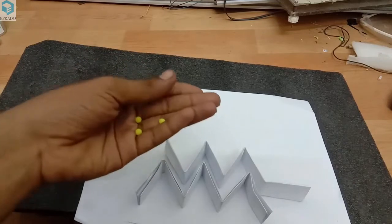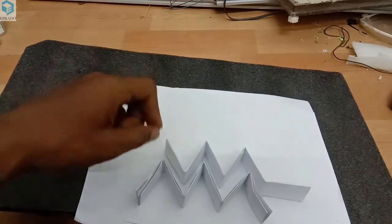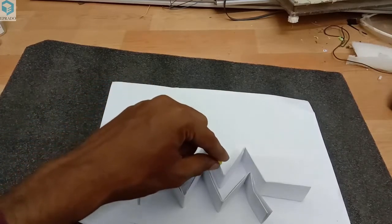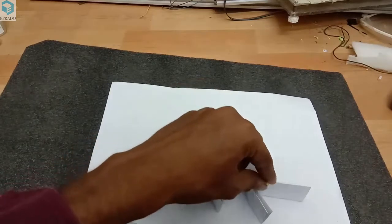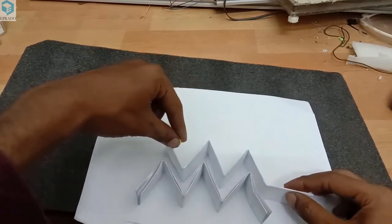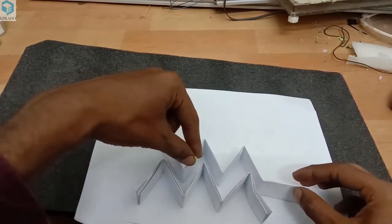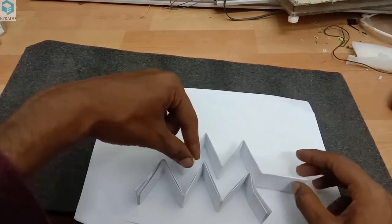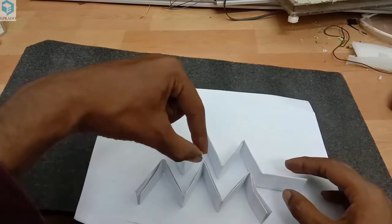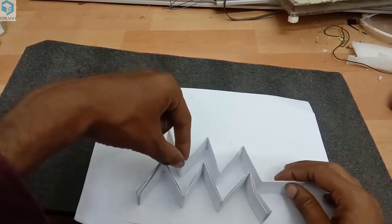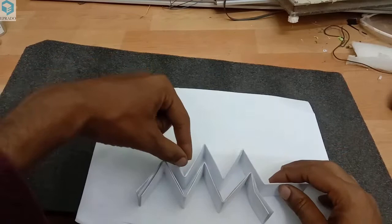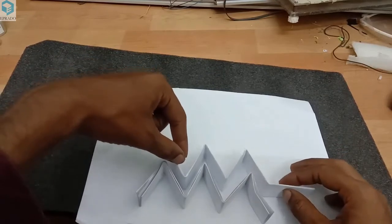Now take the beads that you have. Just check whether these beads can move everywhere through these spaces. If the space is more, then reduce it a little. If the space is too low, then make it a little farther away. It depends on the size of your beads. If the beads are huge, then increase the distance between these two sheets of paper. Now it is very small and I am also reducing the space between these two sheets.